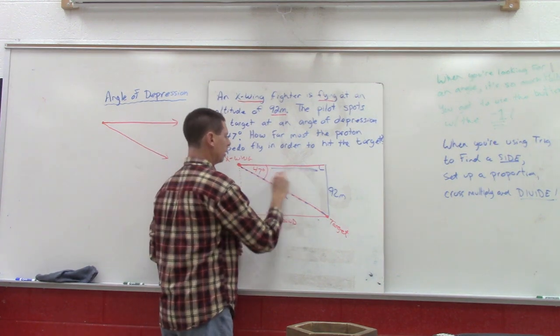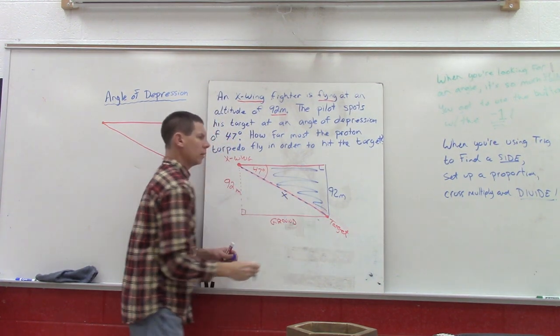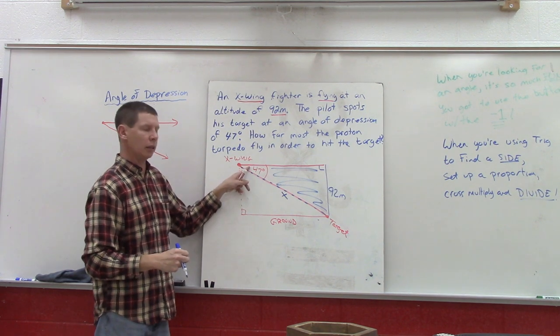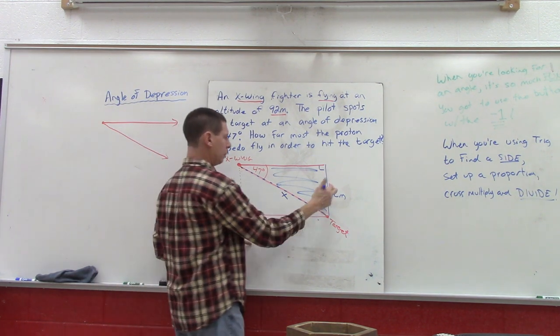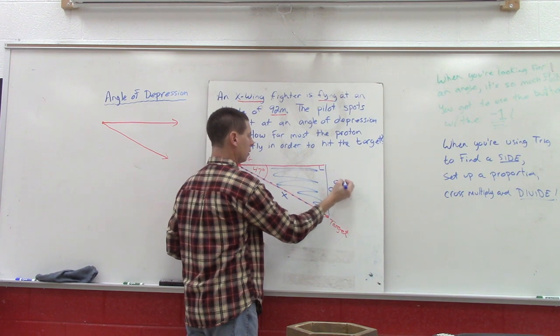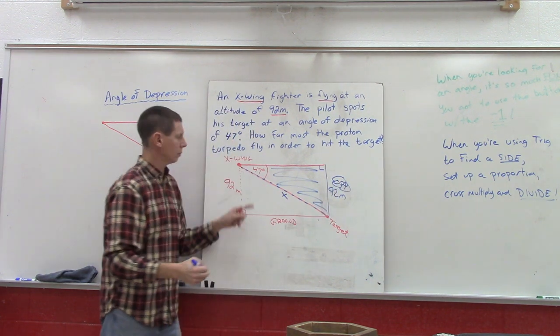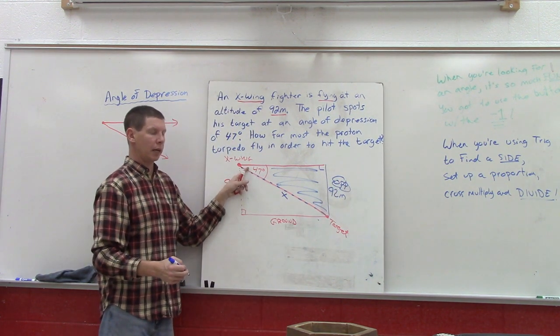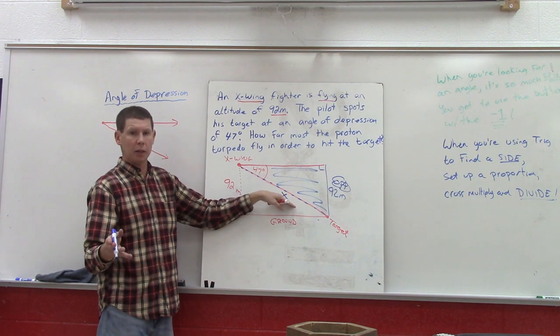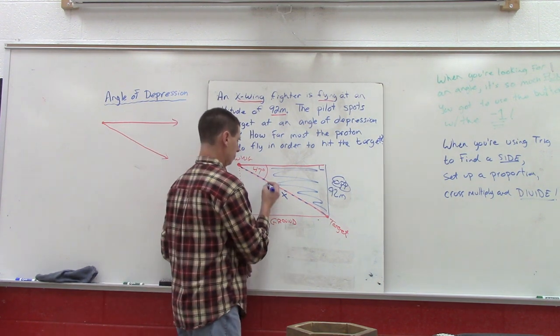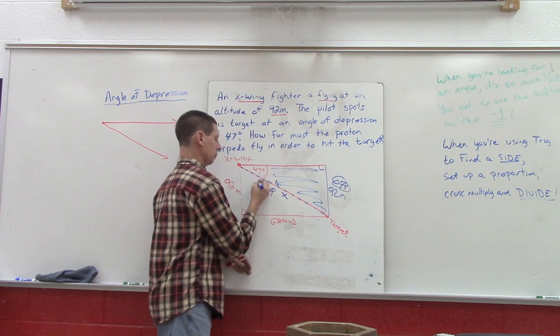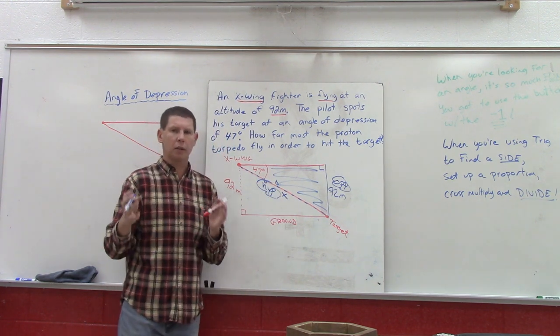Let's look inside this right triangle here to help us solve. We got our angle, the 92 happens to be the opposite leg. We're at 47 degrees. The X happens to be our hypotenuse right here.